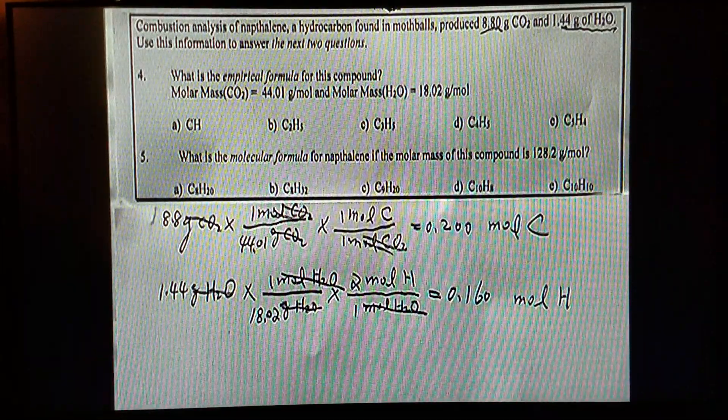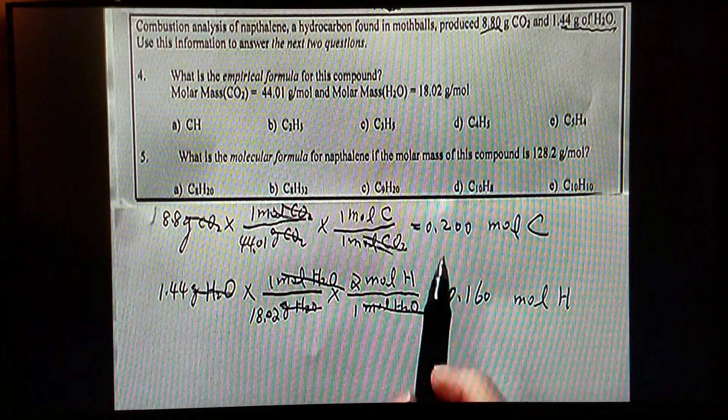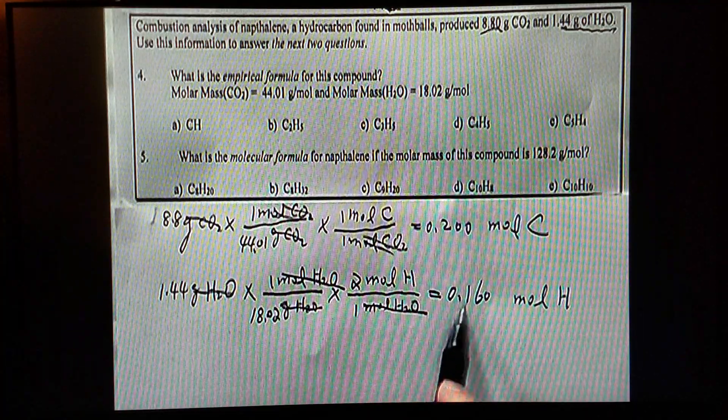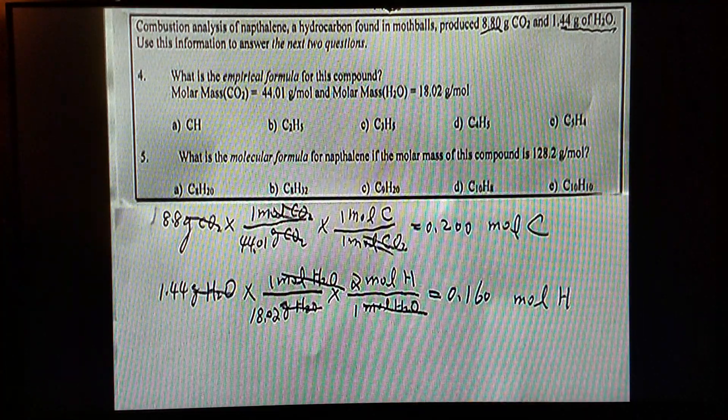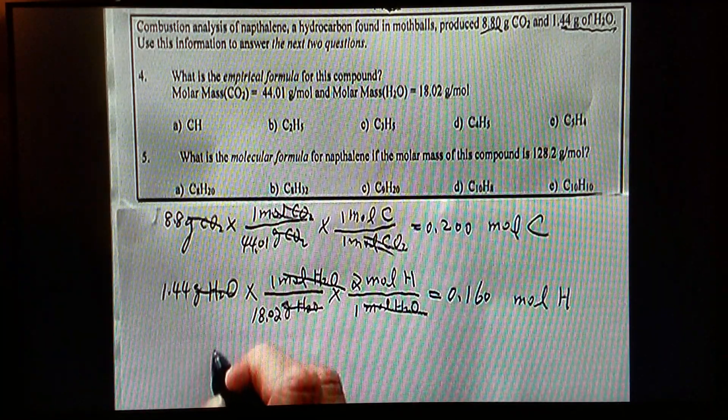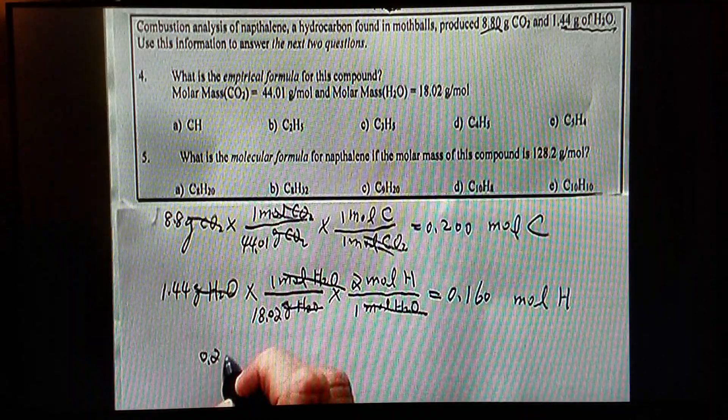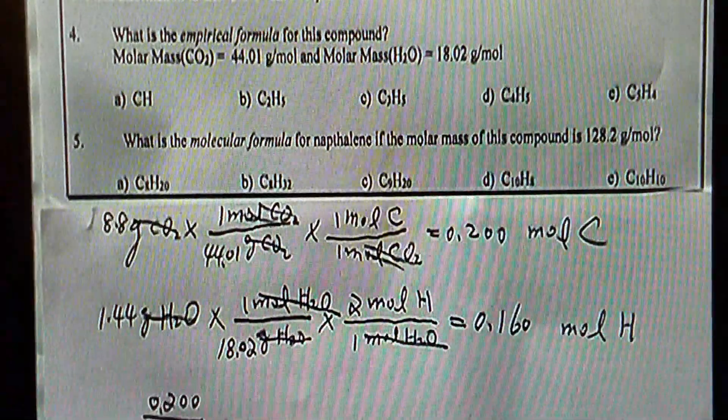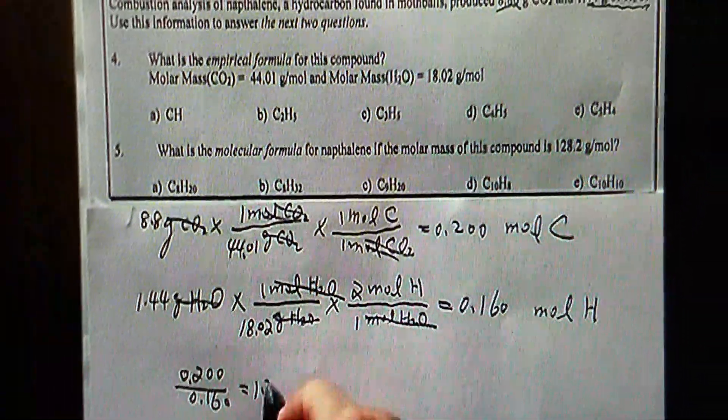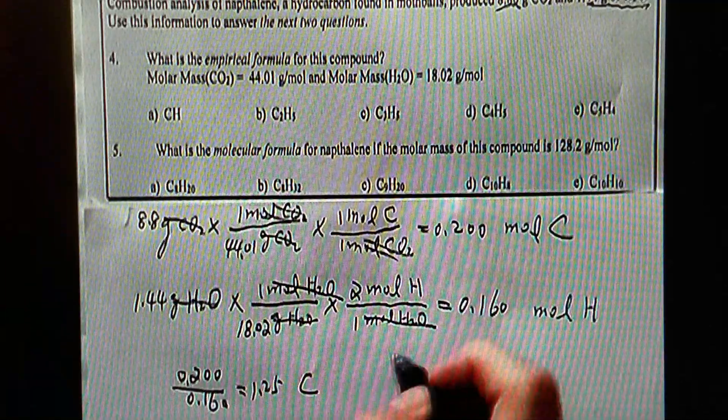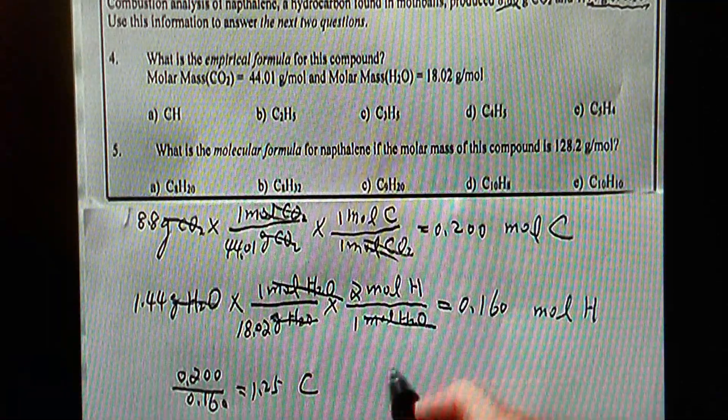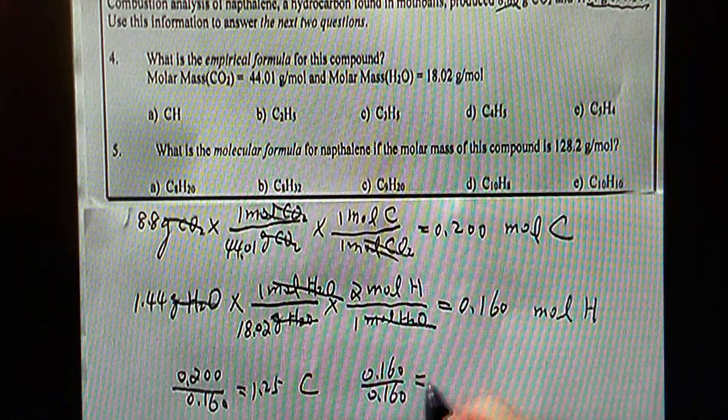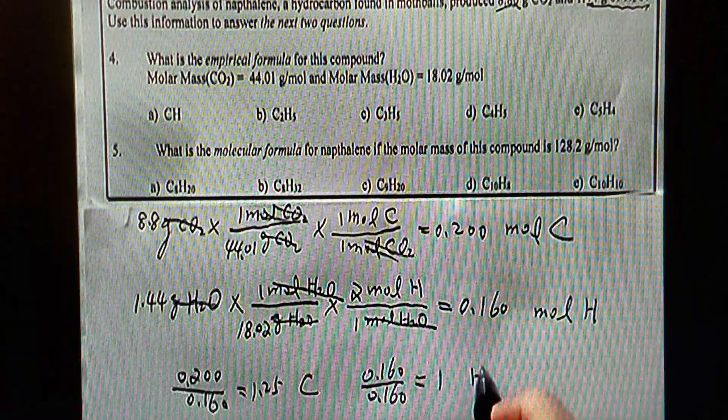So now what do we need to do? We need to divide all of those number of moles by the smallest amount, which is 0.16. Let's do that. For carbon, we have 0.2 divided by 0.16, and that gives me 1.25. That's for carbon. And then for hydrogen, of course, divided by itself, it should be 1. I will write that down anyway, so that should be 1 hydrogen.